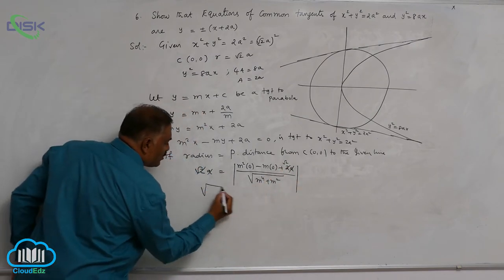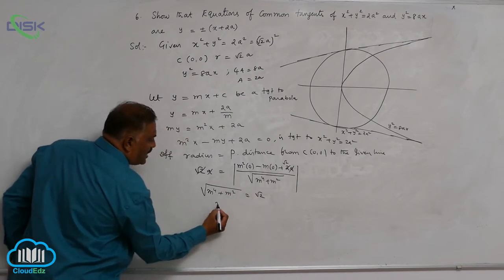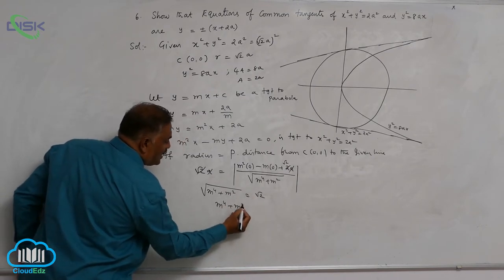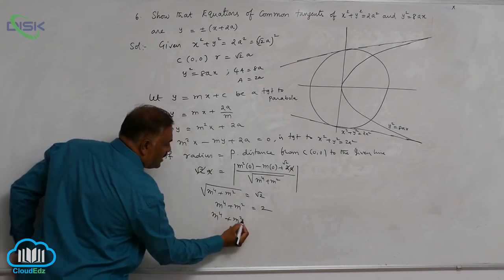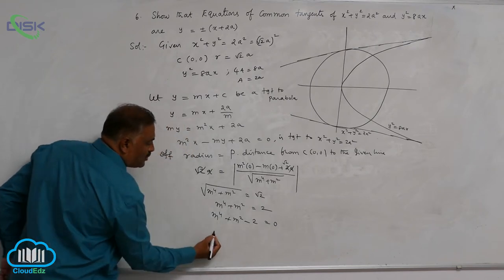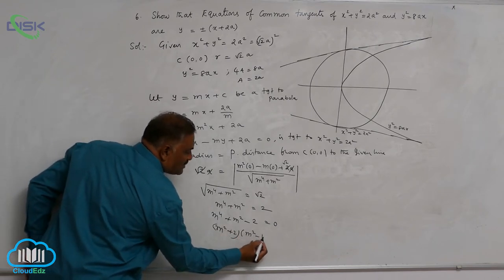Now this is square root of m power 4 plus m square is equal to root 2. m power 4 plus m square is equal to 2. m power 4 plus m square minus 2 is equal to 0. m square plus 2 into m square minus 1 is equal to 0.